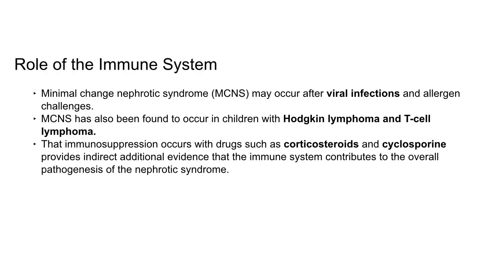In idiopathic, hereditary, and secondary forms of nephrotic syndrome, there are immune and non-immune insults to the podocytes that lead to foot process effacement, a decrease in number of functional podocytes, and altered slit diaphragm integrity. The end result is increased protein leakiness across the glomerular capillary wall into the urinary space. Minimal change nephrotic syndrome may occur after viral infection, allergic changes, and in children with Hodgkin lymphoma and T-cell lymphoma, providing indirect evidence that the immune system contributes to pathogenesis.